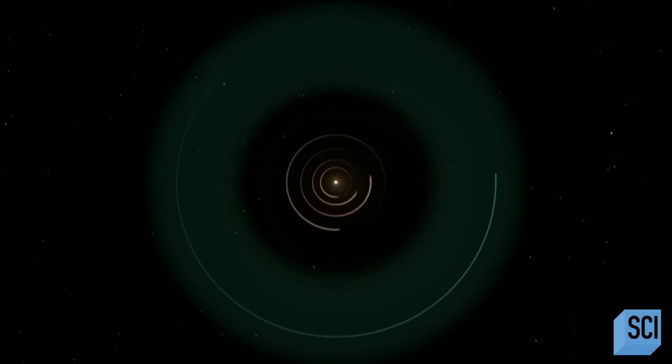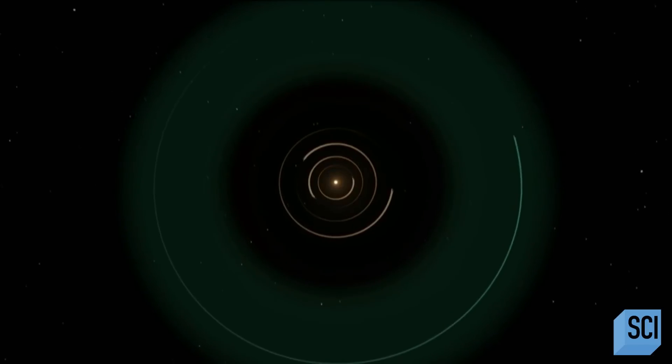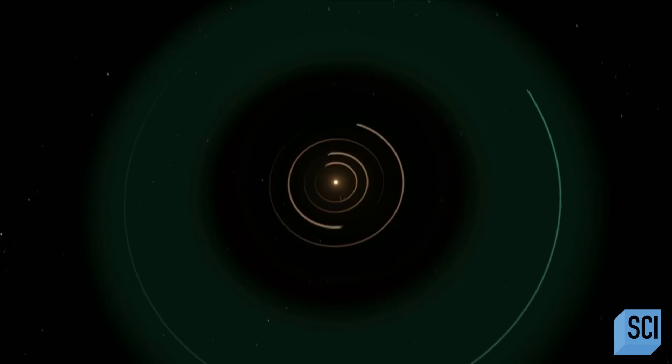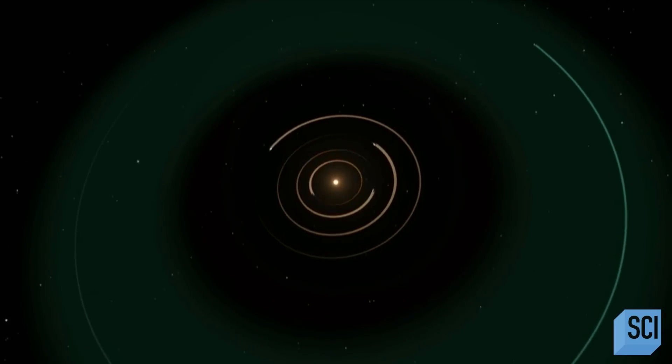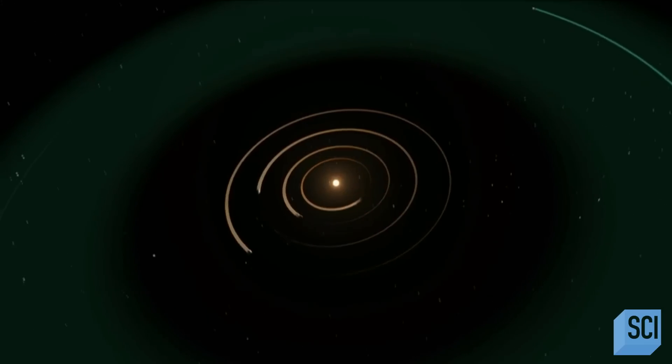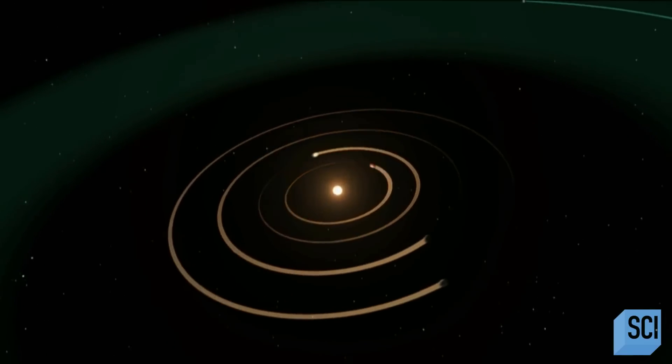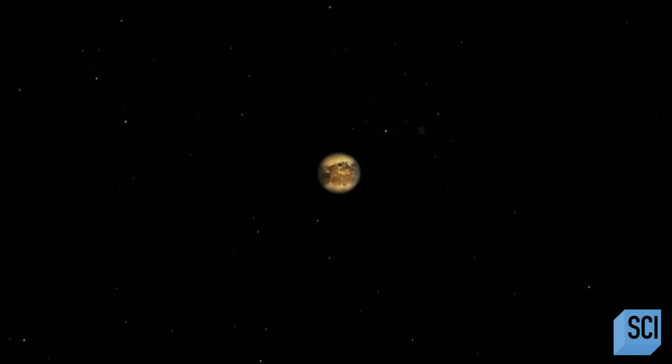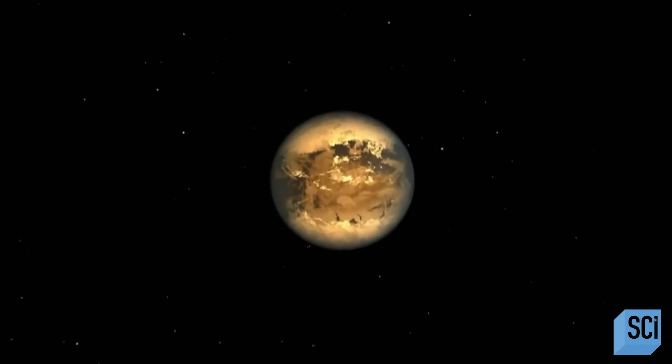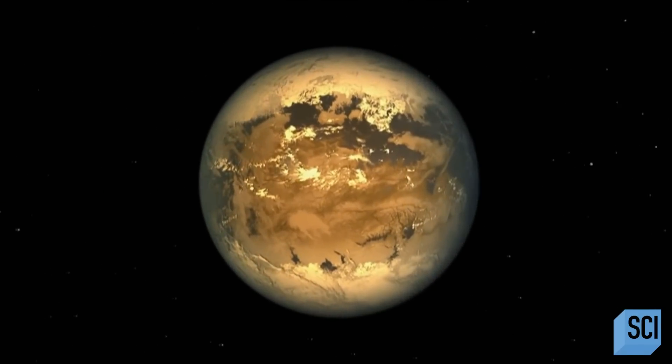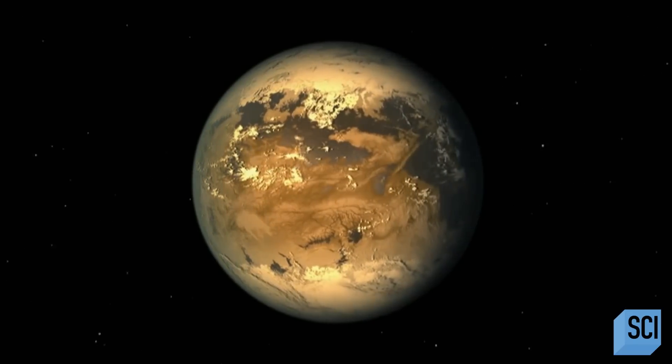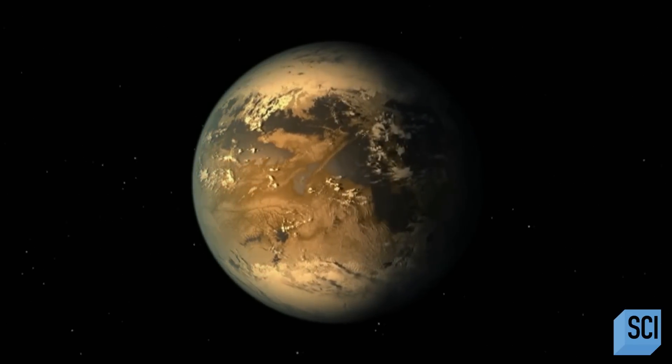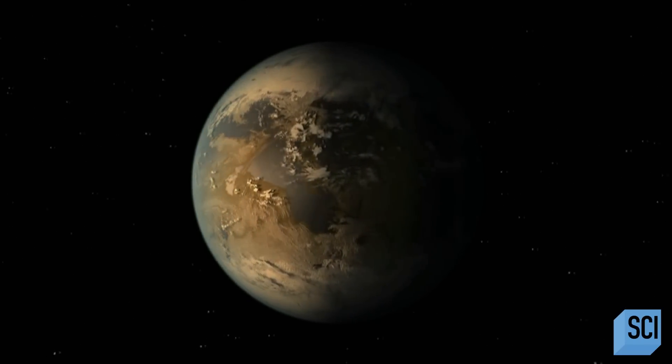Kepler 186f is the first validated Earth-sized planet to orbit a distant star in the habitable zone where liquid water might pool on the planet's surface. The discovery confirms that Earth-sized planets exist in the habitable zones of other stars and signals a significant step closer to finding a world similar to Earth.